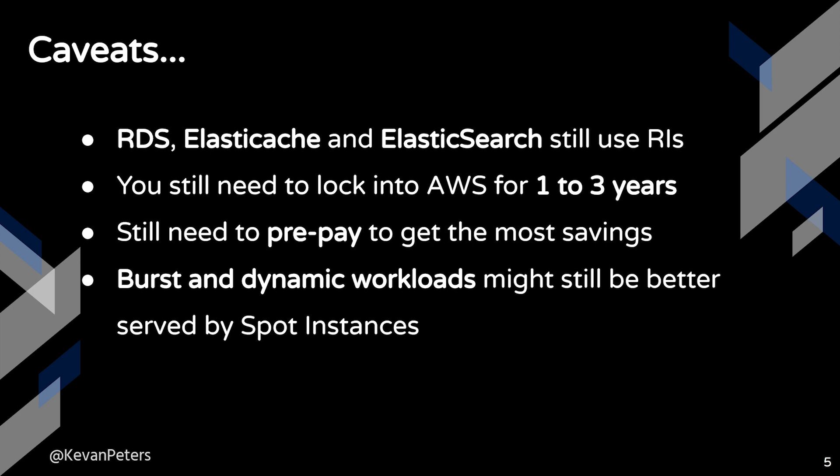Some caveats: RDS, ElastiCache, Elasticsearch — anything that's not EC2 or Fargate that has had reserved instances in the past — still has reserved instances without savings plans, so you'll still have to manage RIs traditionally there. You're still going to have to lock in with AWS for one to three years; there's no flexibility around terms. And you still need to prepay to get the most savings. For many organizations, getting approval to write that big check for an all-upfront RI purchase can be difficult, so a lot of times organizations will just go with no up front, but then you won't get the most savings.